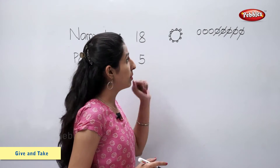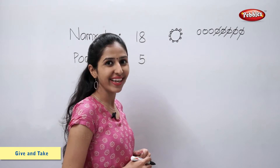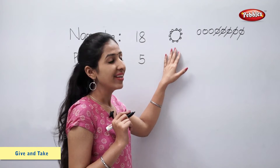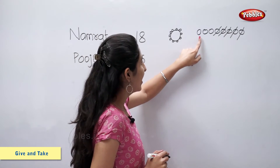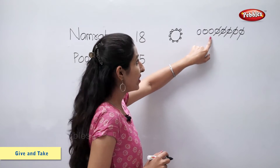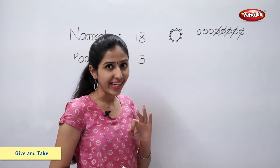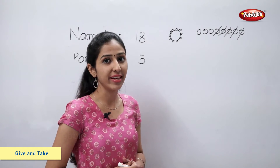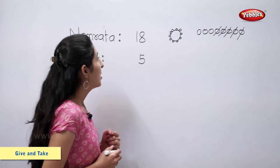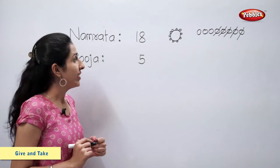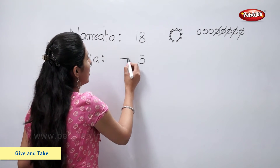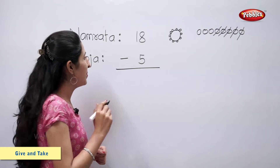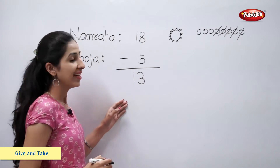So let's count the number of pearls left with Namrata. 1 bangle of 10 pearls and 1, 2 and 3 — 3 loose pearls. So there are 13 pearls left with Namrata. We can also say that 18 minus 5 is equal to 13.